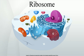Even though mitochondria possess ribosomes similar to the bacterial ones, mitochondria are not affected by these antibiotics because they are surrounded by a double membrane that does not easily admit these antibiotics into the organelle.